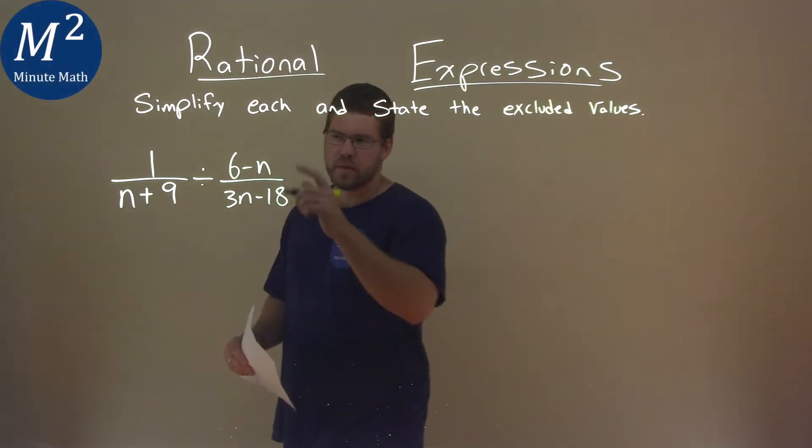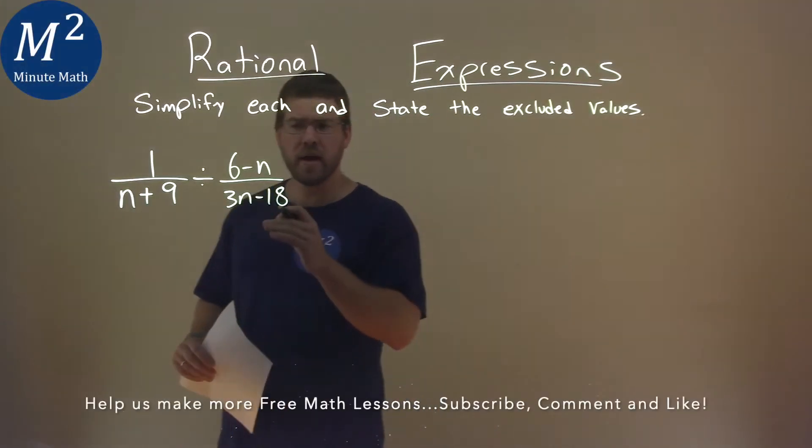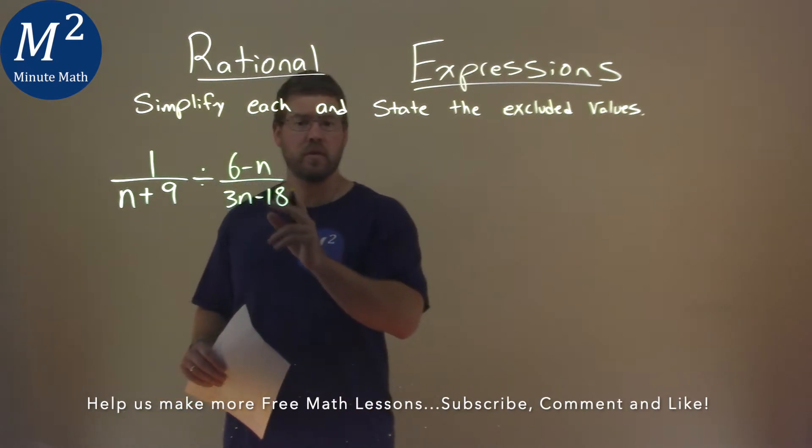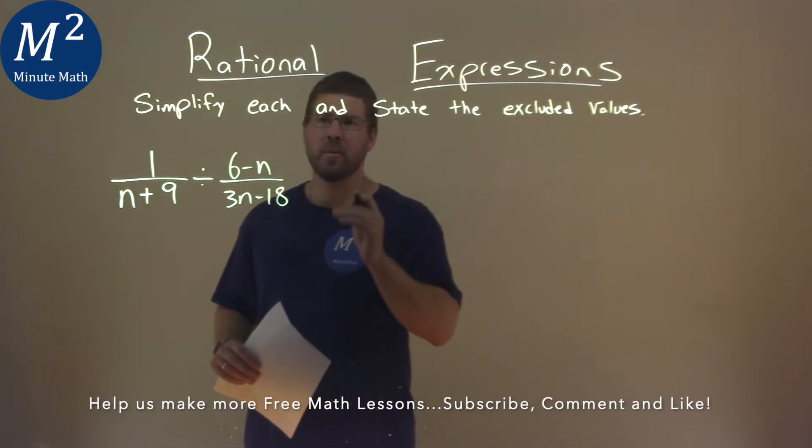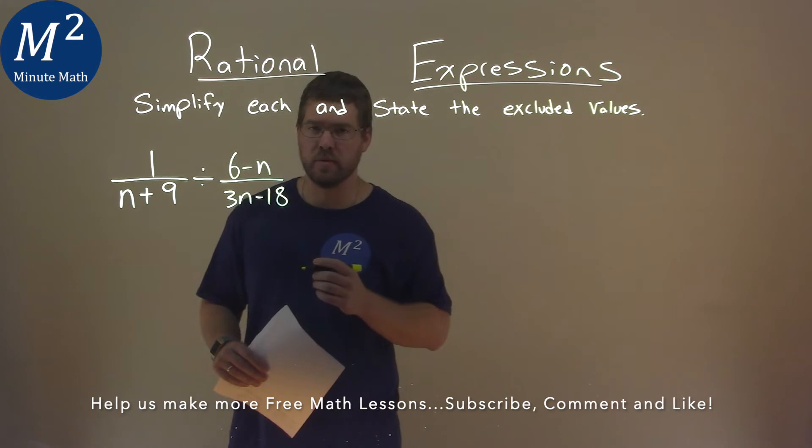We're given this problem right here: 1 over n plus 9 divided by 6 minus n over 3n minus 18, and we need to simplify this and state the excluded values.